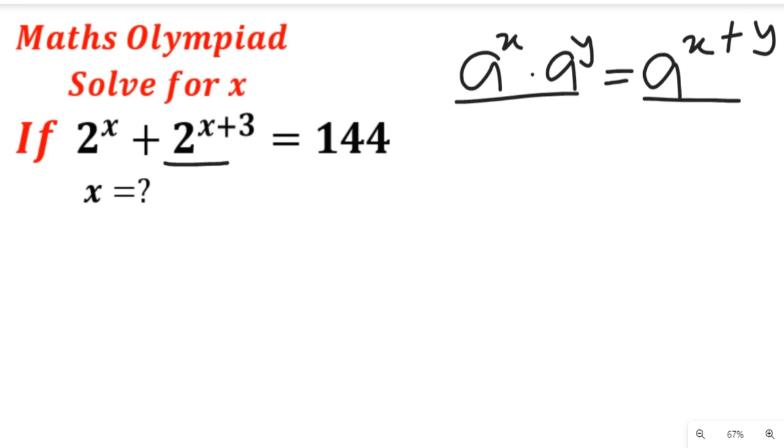So if we bring that into this equation, we'll have 2 to the power of x plus 2 to the power of x multiplied by 2 to the power of 3, equal to 144.